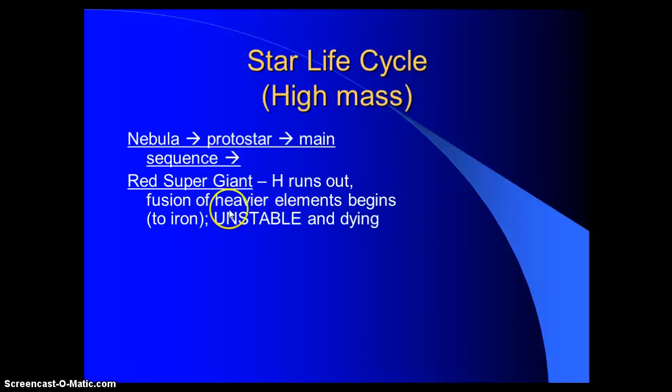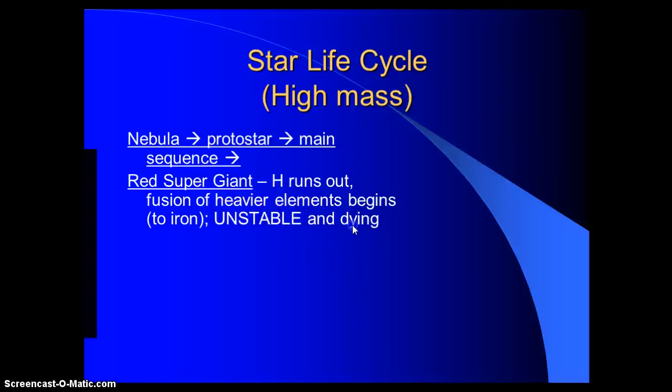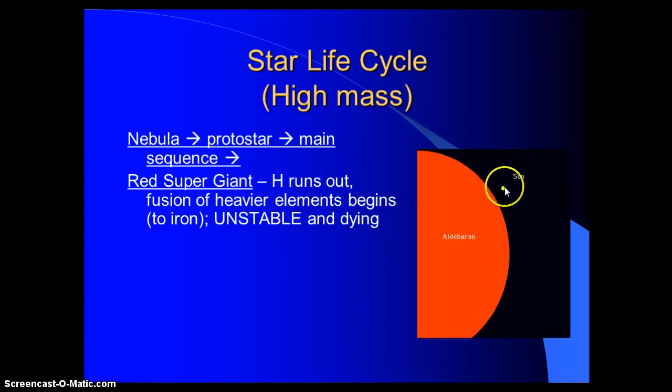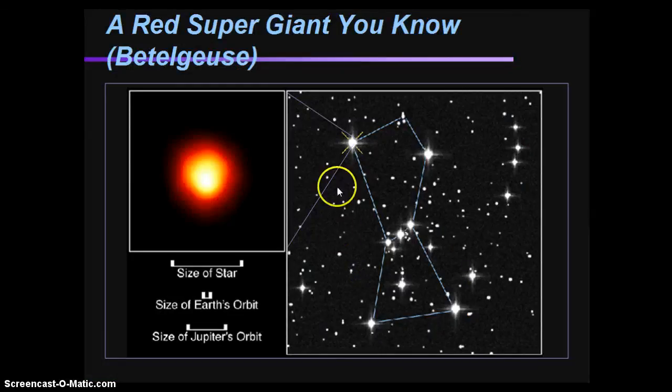Hydrogen runs out. Fusion of heavier elements begins. And it goes further than the red giant would go. The red giant goes to maybe oxygen or carbon. But this is going to go all the way to iron. It is still considered unstable, just like the red giant was. And it's dying. This is the sun. This is a star called Aldebaran. Size-wise, these are crazy different. This is a very, very big red supergiant star. It is on its way out. It is dying.